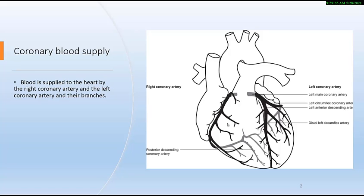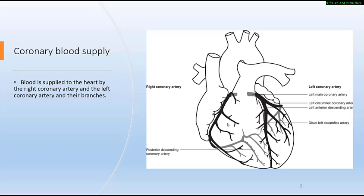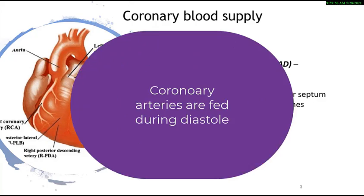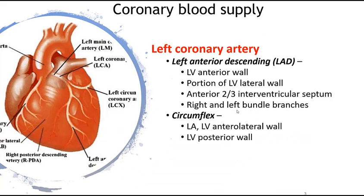Coronary artery circulation: the coronary arteries arise from the base of the aorta and course through the epicardial surface of the heart, then dive deep into the myocardium. The blood supply to the heart is provided by the right coronary artery and the left coronary artery and their branches. They are fed during diastole.